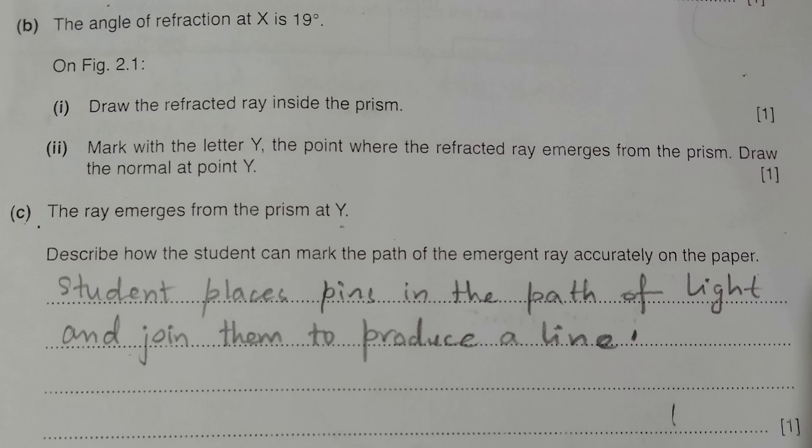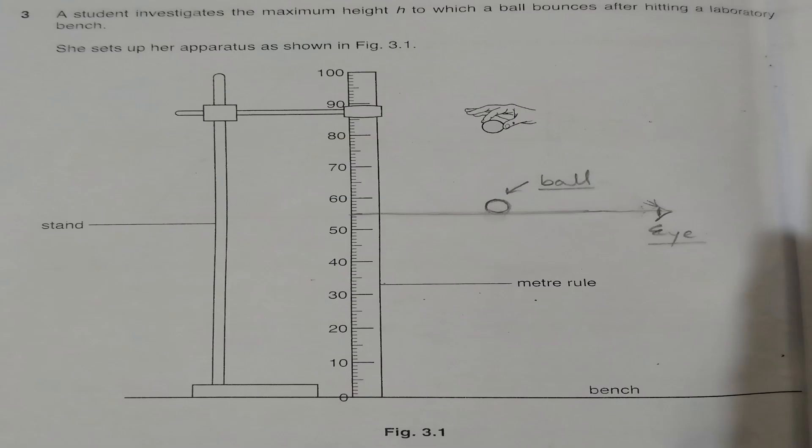The student places pins in the path of the light and joins them to produce a line showing the path of light as it exits the glass prism. Mark the endpoint with the label 'i' along the path.